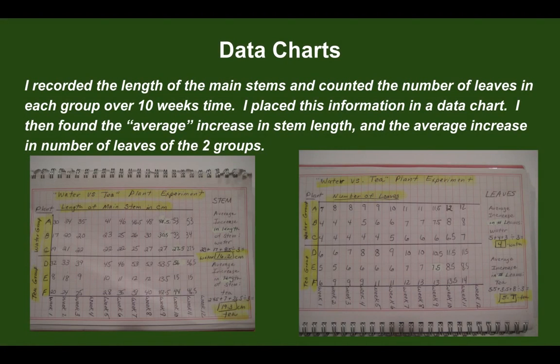Next, show your data. I recorded the length of the main stems and counted the number of leaves in each group over ten weeks. I placed this information in a data chart, then found the average increase in stem length and the average increase in number of leaves for the two groups.